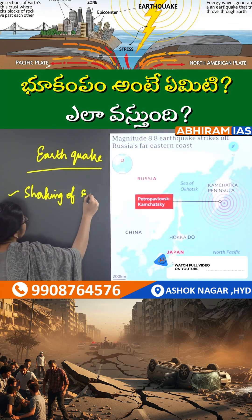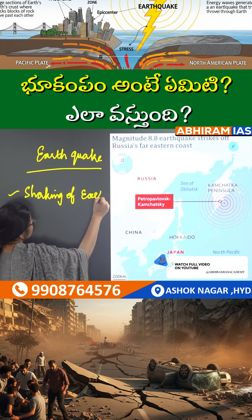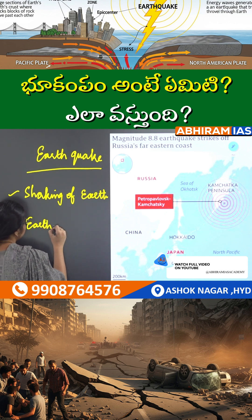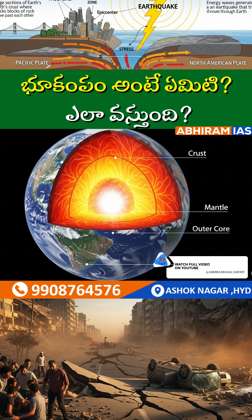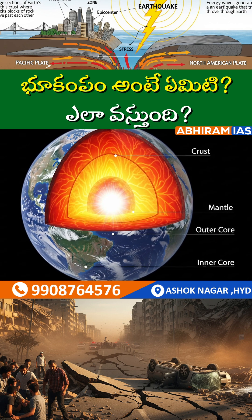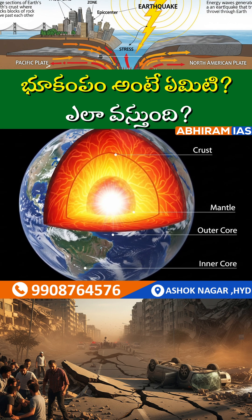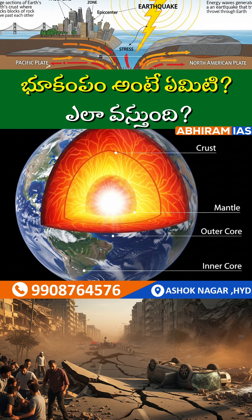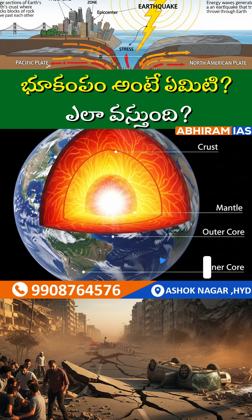What are the earth's layers? The earth has three layers: the first one is the crust, the second is the mantle, and the third is the core.